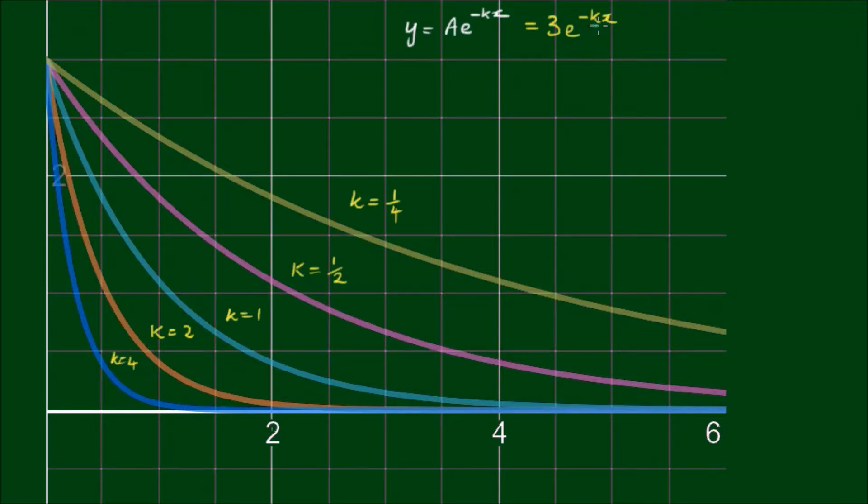So k describes the rate of decay. It's the decay constant. And as we can see, the larger the decay constant the quicker the rate of decay.